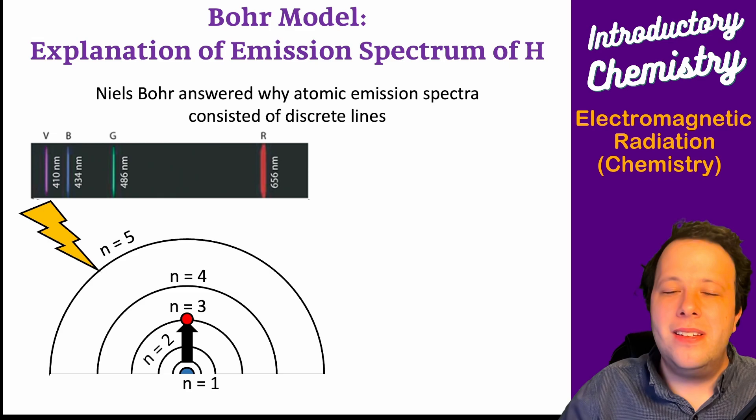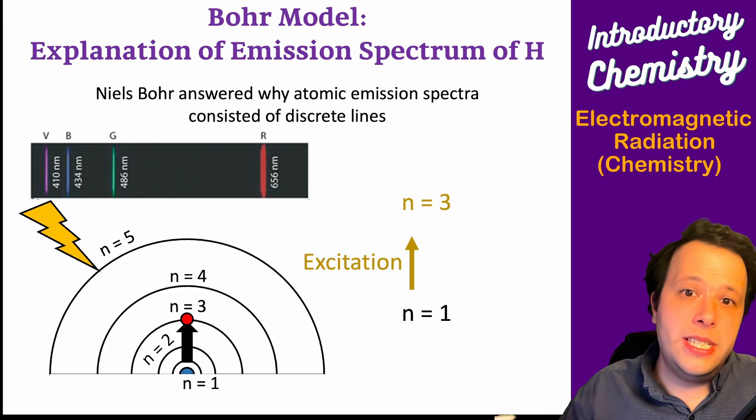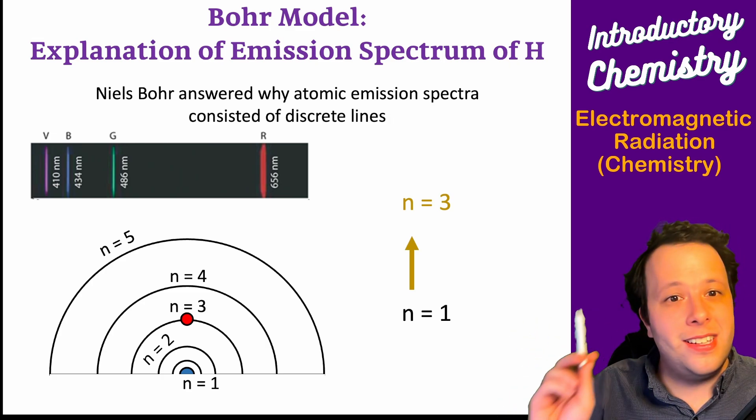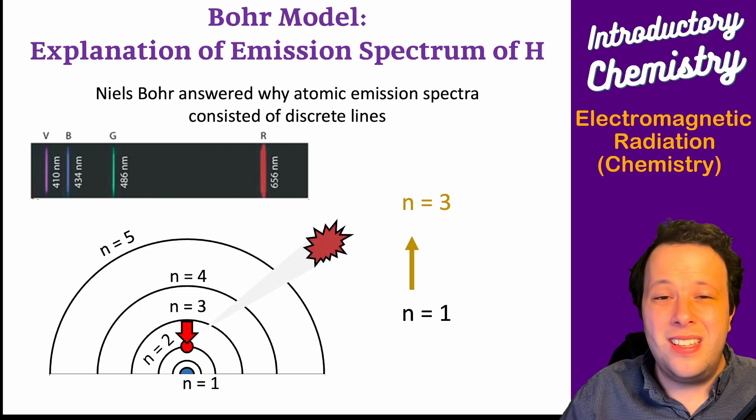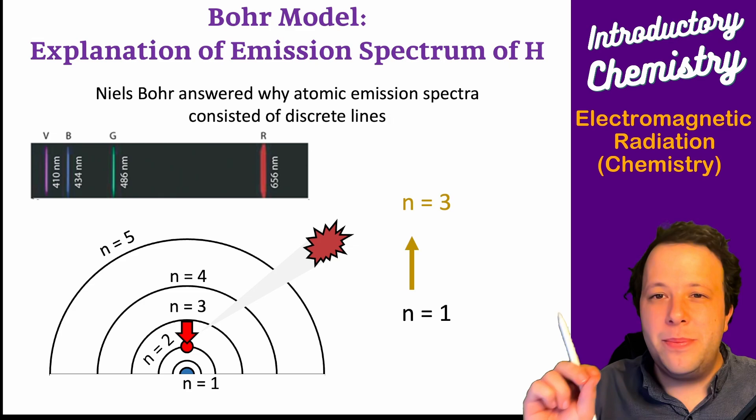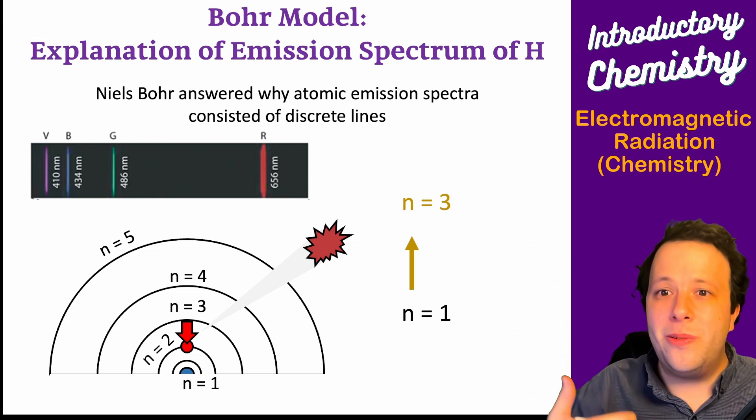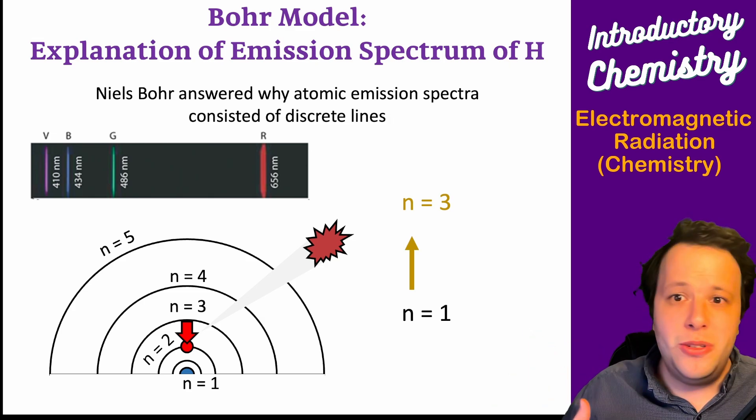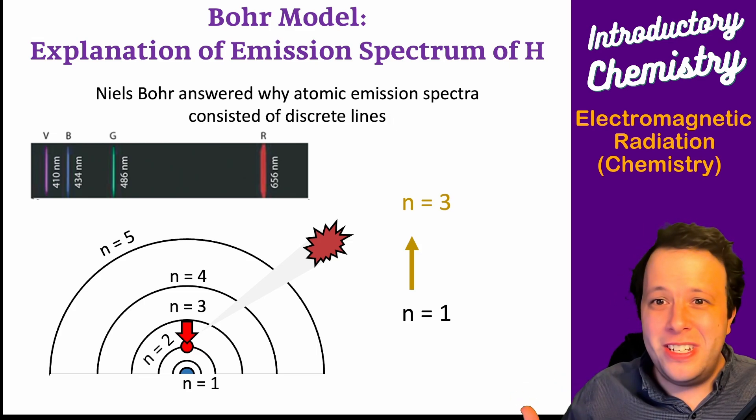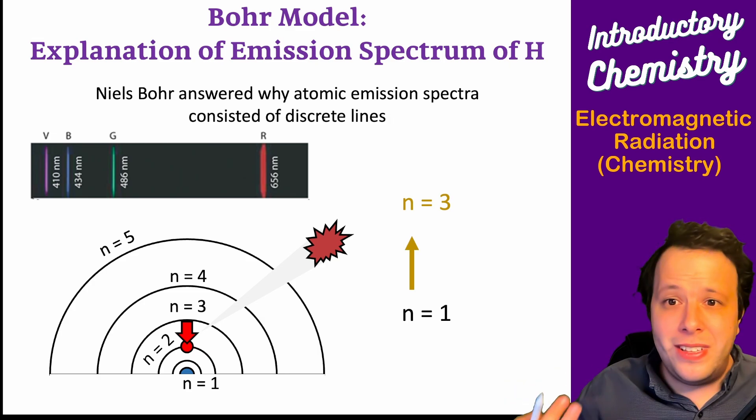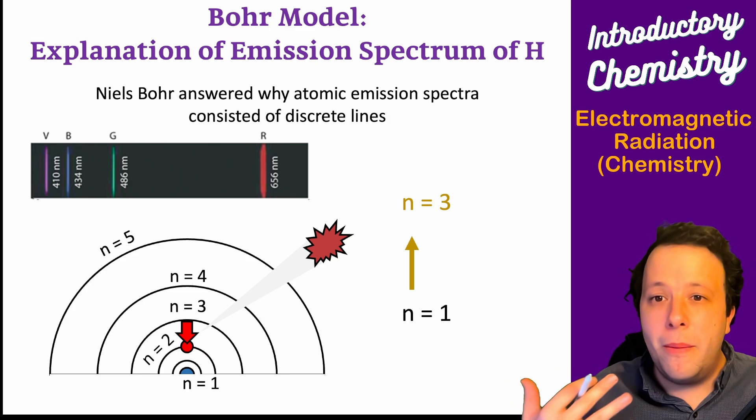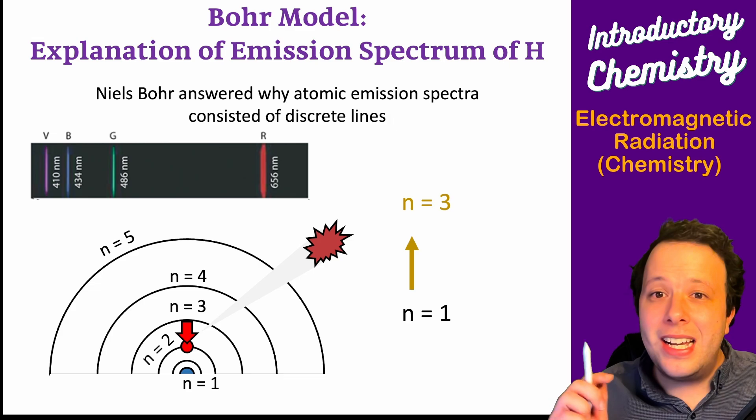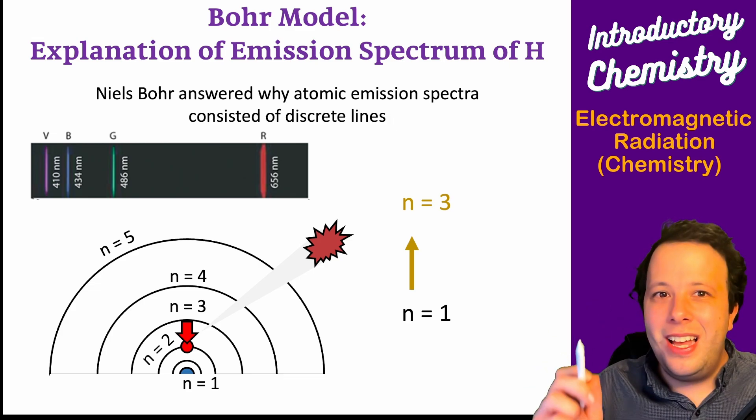If I excite it from level 1 to 3, it's going to relax back down. Notice the little red dot in the third level. If it's going to relax, the only way it can is by releasing a photon. This is how it relaxes, it needs to get rid of the energy. Your relaxation methods might be playing video games or hobbies. In this case, it releases a red photon.